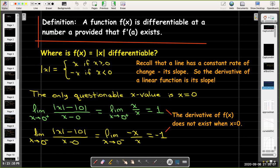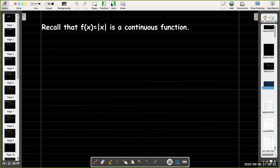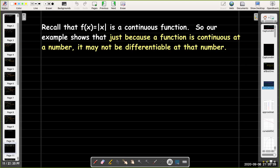So since the limit from the left differs from the limit from the right, the limit does not exist. And so f(x) is not differentiable when x equals zero. So we had a very familiar function. We knew that it was a continuous function for all real numbers, but it was not a function which was differentiable at zero. So this example shows that just because a function is continuous at a number, it may not be differentiable at that number.